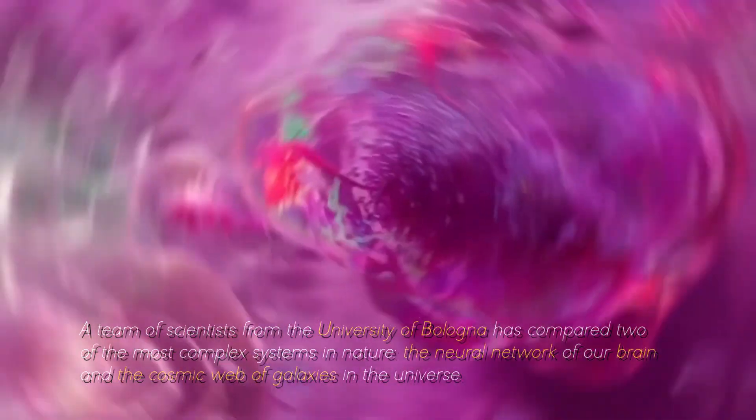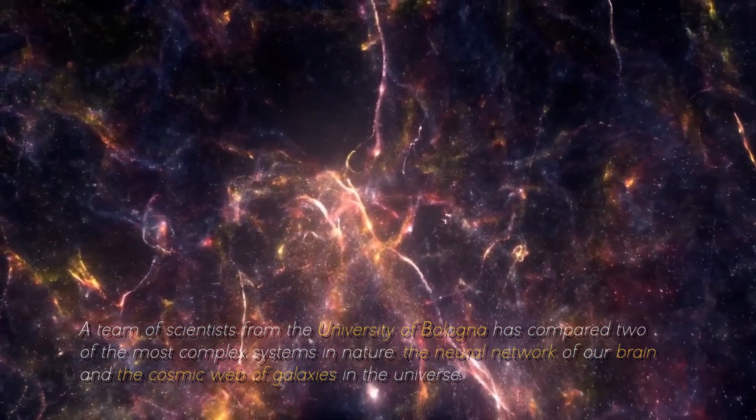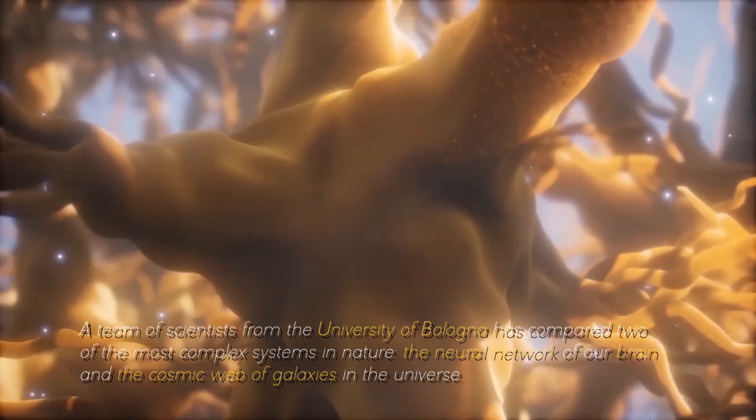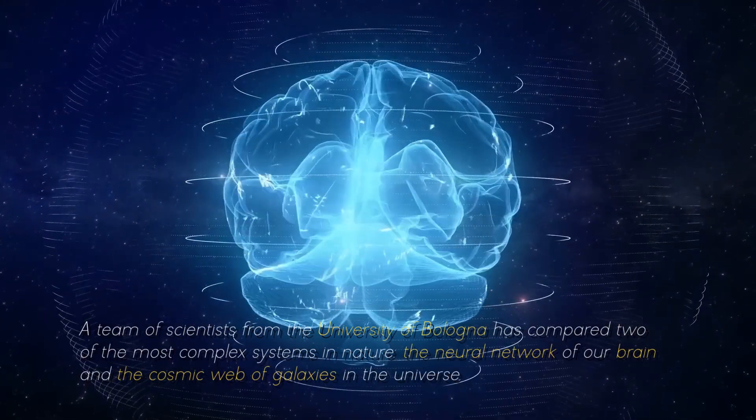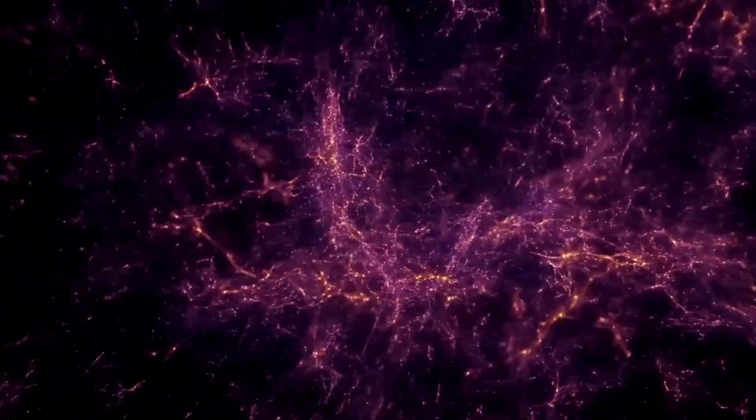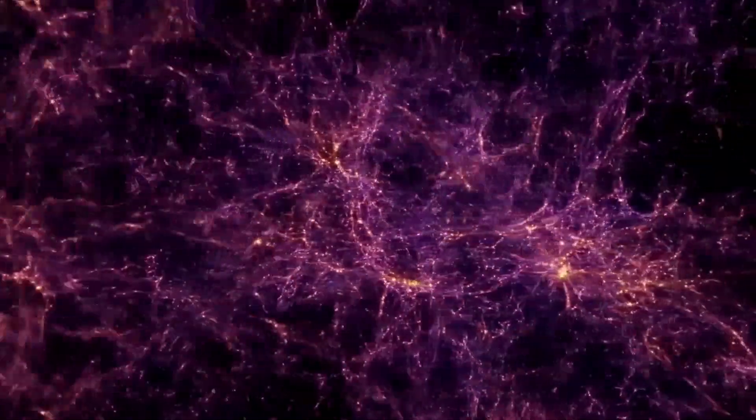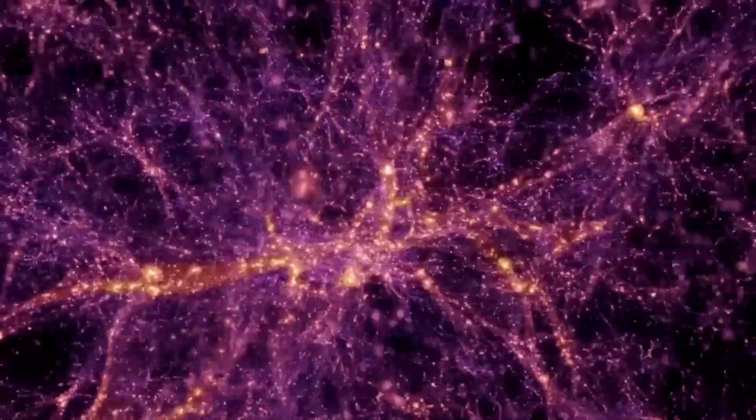A team of scientists from the University of Bologna has compared two of the most complex systems in nature, the neural network of our brain and the cosmic web of galaxies in the universe. What did they discover? That they are incredibly similar. And not just as they look if we compare a human neuron with a cluster of galaxies. There's more.